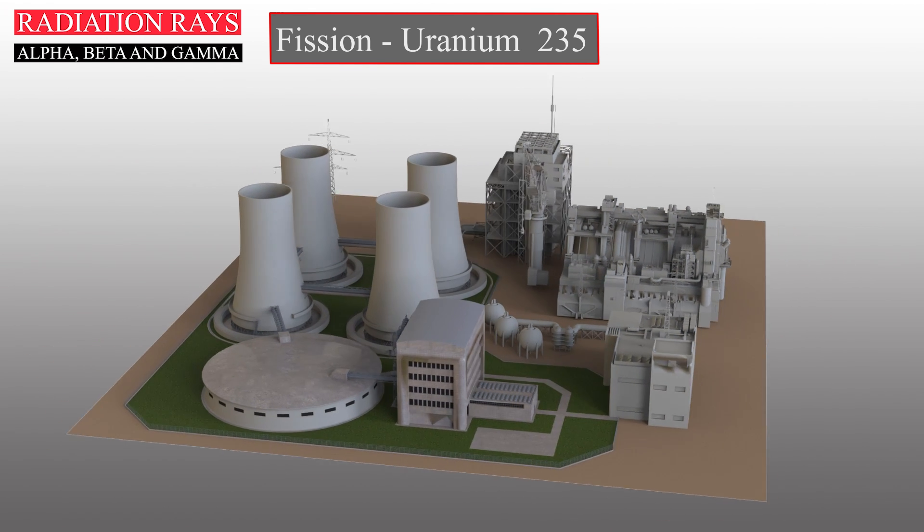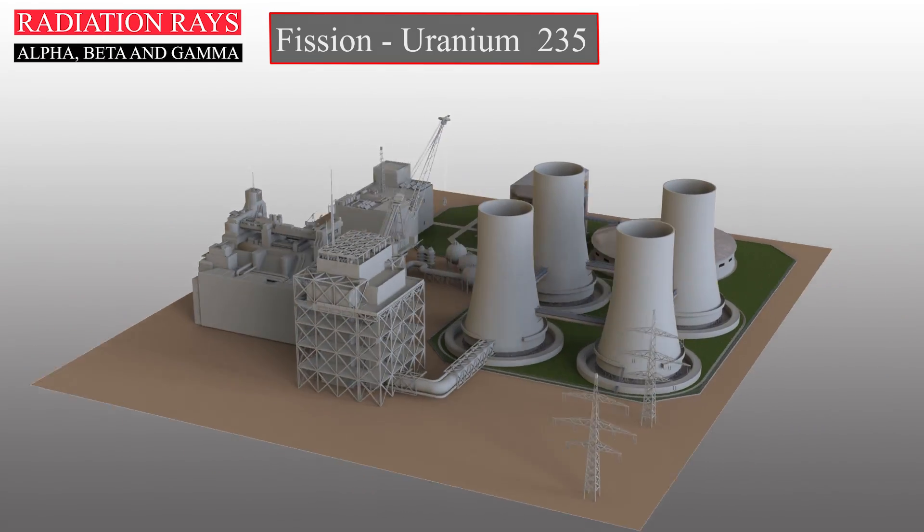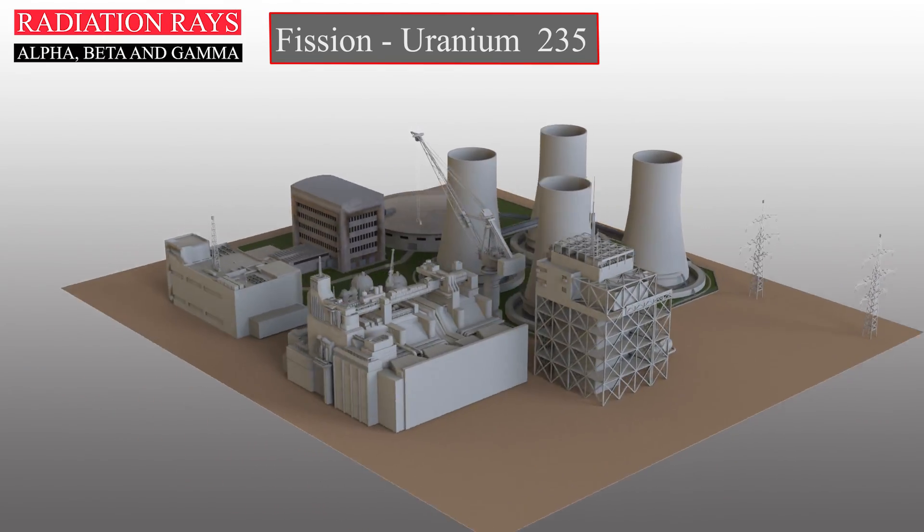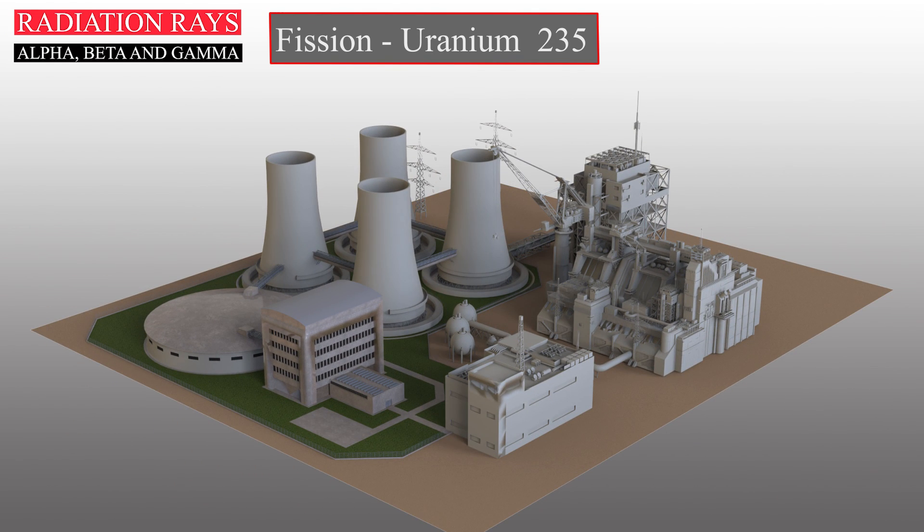The nuclear fission process is also the source of energy used to operate nuclear power plants. In a controlled environment, the tremendous heat generated by splitting uranium-235 is used to produce steam that drives turbines to generate electricity.